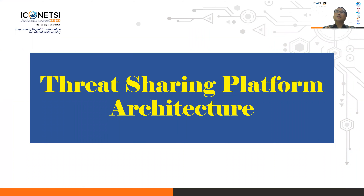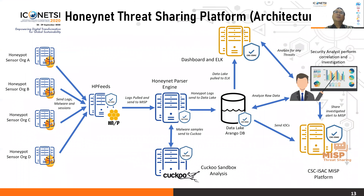Here is the architecture of the Threat Sharing Platform and data lake we designed. On the left, honeypots distributed in different locations collect data through HP feeds, which are pulled into a HoneyNet parser engine. The parser engine processes all data before it enters the data lake. We can also add information from malware captured using sandbox analysis like Cuckoo. Once analyzed by a security analyst, the data is displayed on a dashboard and is ready to be shared with other communities.